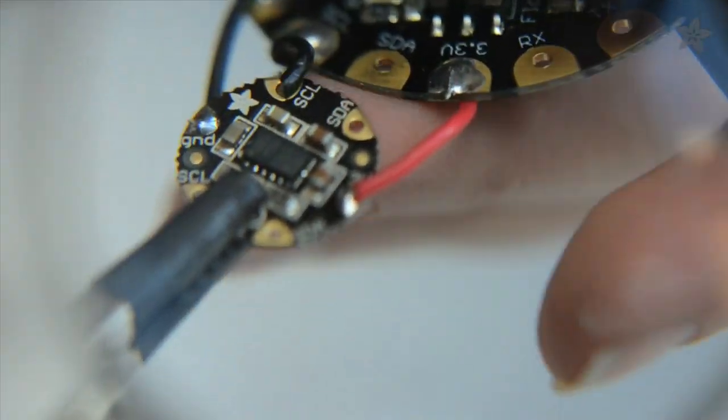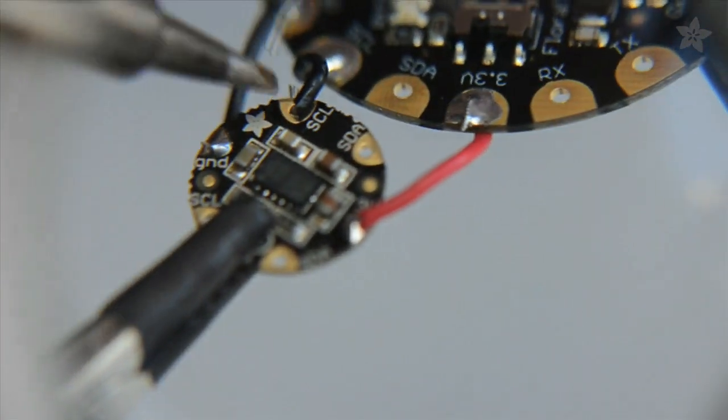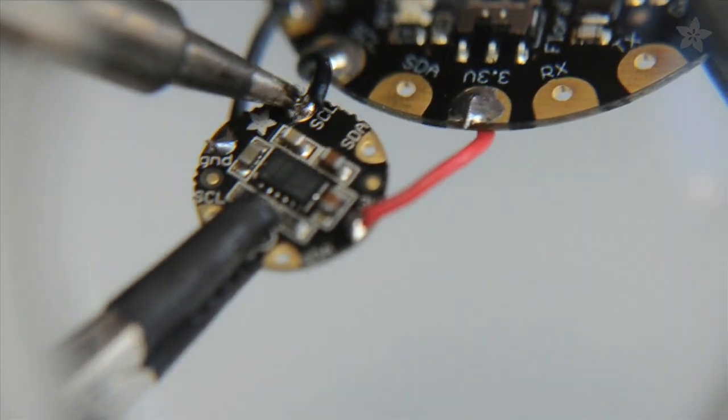We'll use this Flora accelerometer to detect when we're braking, so hook that up to your Flora and solder the connections with little pieces of wire.